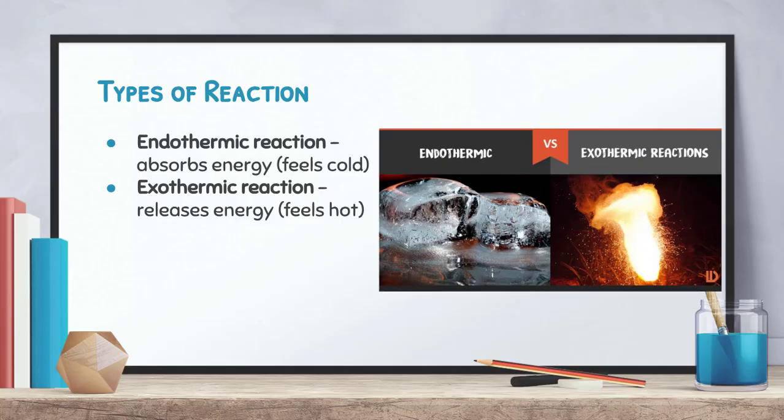There are two main types of chemical reactions we are going to look at. The first is known as an endothermic reaction and the second is an exothermic reaction. Endothermic reactions absorb energy from the environment and feel cold, while an exothermic reaction releases energy. An exothermic example would be those little hand warmers you can get in winter — you put one in your glove, break the disc inside, and it becomes very hot. That is an exothermic reaction.